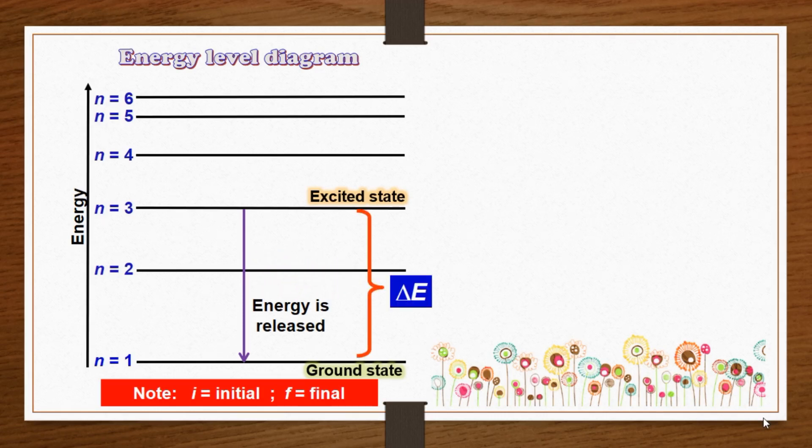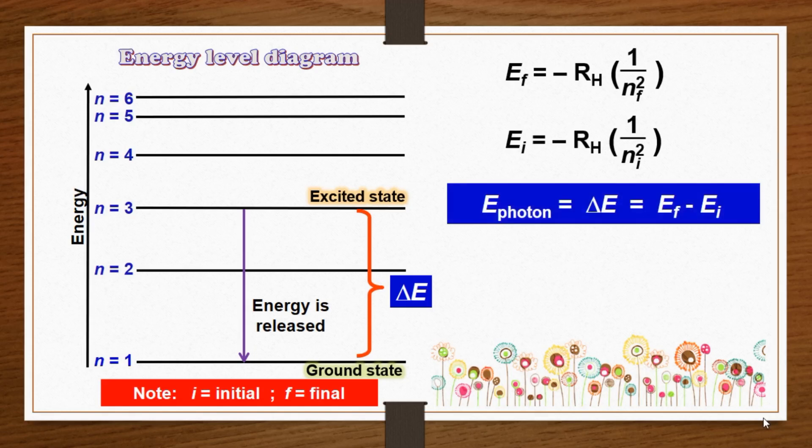The energy difference can also be calculated by using the following equation. As the transition results in the emission of a photon of frequency and energy, we can write.